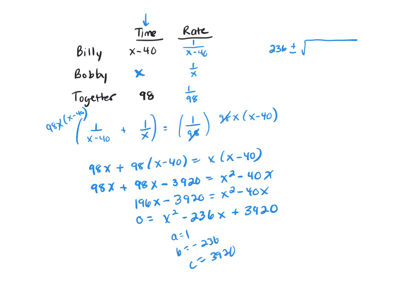So negative B, plus or minus B squared, so that's going to be negative 236 squared, which is 55,696, I'm using a calculator, B squared minus 4 times A times C, which is 3920. And that's all over 2 times A, which would just be 2.